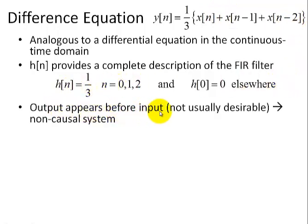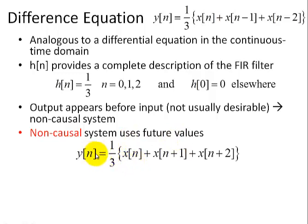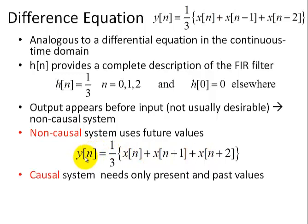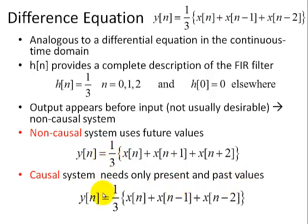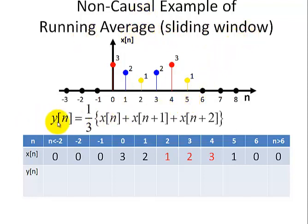Whenever the output appears before the input — which is usually not desirable in real life — we call this a non-causal system, which by definition uses future values. Here's an example where we have the present value and the two past values for averaging. A plus sign in the index implies a future value, while a minus sign means it's a past value with respect to our reference present value x(n). The non-causal moving average filter uses a sliding window of 3 with the present value and two future values to get output y(n).